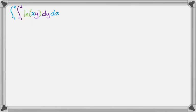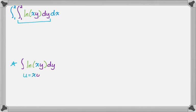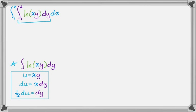Now let's do the actual double integral. We'll start with the inner integral: from 1 to 2 of ln(x·y) dy. I'll treat it as an indefinite integral first to find the antiderivative. I'll use u-substitution — let u = x·y, so du = x·dy, which means dy = (1/x) du. Substituting, I pull out 1/x and get (1/x) times the integral of ln(u) du.